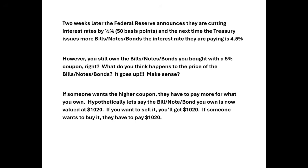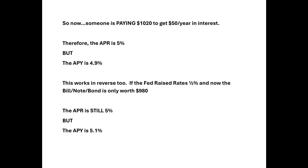If you want to sell it, you get $1,020. If I want to buy it, I have to pay $1,020. I'll get the $50 a year, but I paid $1,020, not $1,000 like you did. Your APR — your annual percentage rate — on the bond I just bought from you is still 5% of the par price, the $1,000, so I get the $50. But my APY, my annual percentage yield — what I'm actually netting — is $50 divided by $1,020, which is 4.9%, which is still better than what the Fed just came out with at 4.5%.